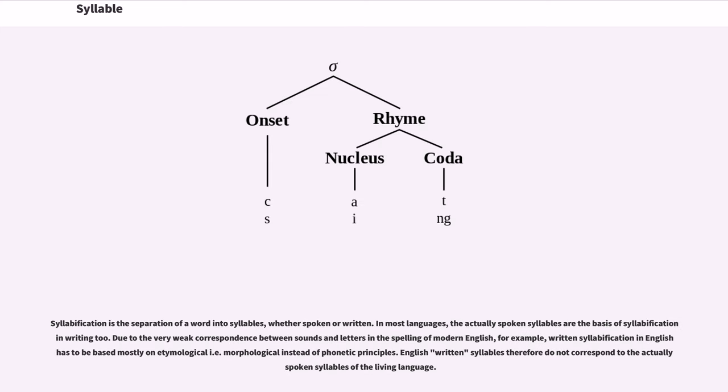Syllabification is the separation of a word into syllables, whether spoken or written. In most languages, the actually spoken syllables are the basis of syllabification in writing too. Due to the very weak correspondence between sounds and letters in the spelling of modern English, for example, written syllabification in English is to be based mostly on etymological, i.e. morphological, instead of phonetic principles. English written syllables therefore do not correspond to the actually spoken syllables of the living language.